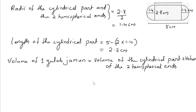The volume of the cylindrical part is πr²h plus the volume of two hemispherical ends, 2 into 2/3 πr³. Here, πr² is common, inside the bracket h plus 4/3 r. So the volume of one gulab jamun is πr²(h + 4/3 r) cm³.